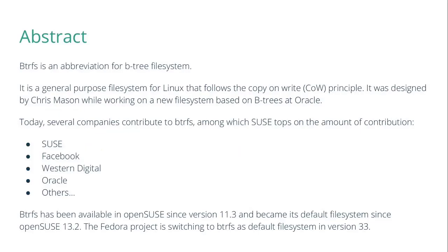This presentation will cover Btrfs and two of its features: sub volumes and snapshots. Btrfs is an abbreviation for B-tree file system. I have seen people pronouncing it in different ways — some calling it Btrfs, butter file system, or B-tree file system. I usually stick to Btrfs. Btrfs is a general purpose file system for Linux that can scale up for large storage.